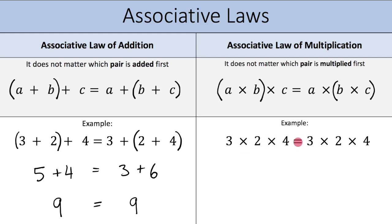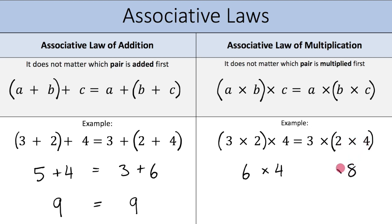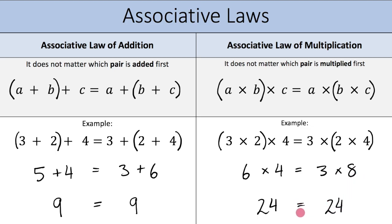We have 3 times 2 times 4. On the left side I pair the 3 and the 2: (3×2) times 4 gives 6 times 4, which is 24. On the right side I pair the 2 and the 4: 3 times (2×4) gives 3 times 8, which is 24. They equal each other, which means the associative law of multiplication works — it does not matter which pair is multiplied first.